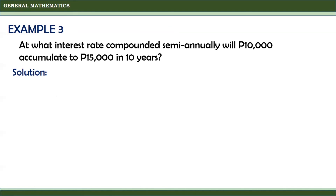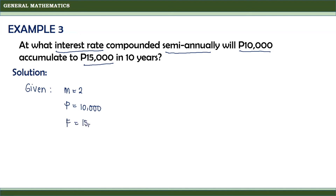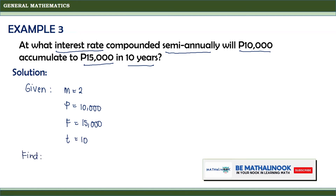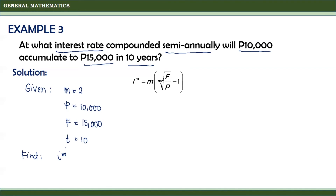From the problem, we need to solve for the interest rate I(M). The given are: since the interest is compounded semi-annually, M equals 2; the amount invested is P equals 10,000; the accumulated amount is F equals 15,000; and the time is T equals 10 years. Using the formula I(M) equals M times the MT-th root of F divided by P minus 1, we substitute: 2 times the 20th root of 15,000 divided by 10,000 minus 1.